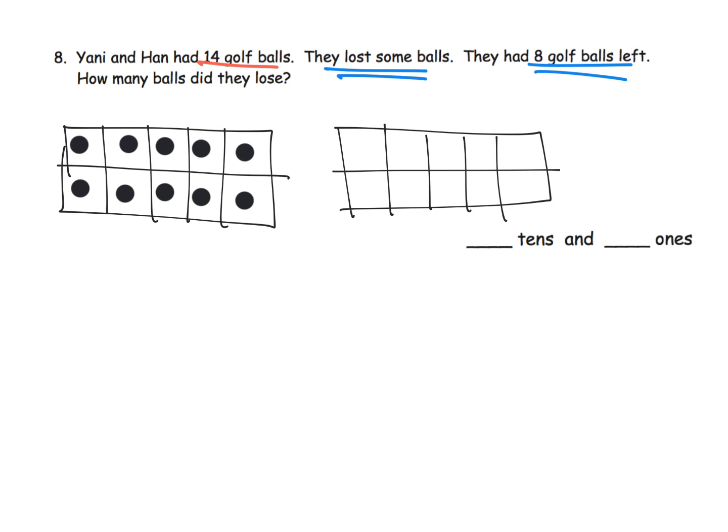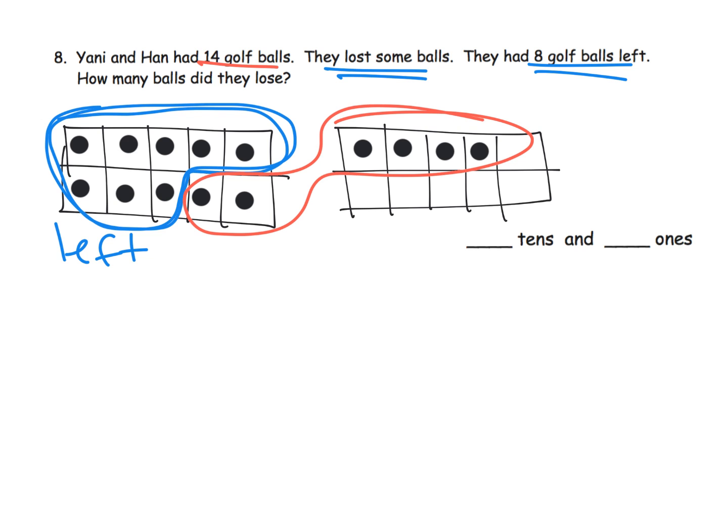So we have a ten and four more. And then it says that they lost some of them and they only have 8 golf balls left. So if they only have 8 golf balls left, here's our 8 golf balls that are left. So how many did we lose? Well, we lost these 4 plus these 2, so these are the ones that they lost.